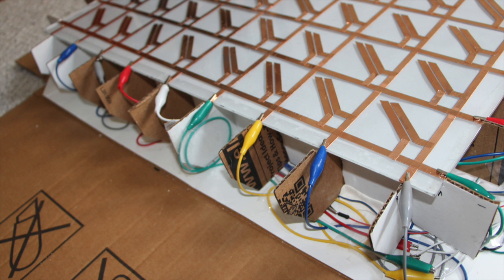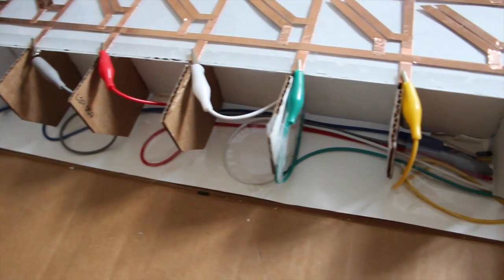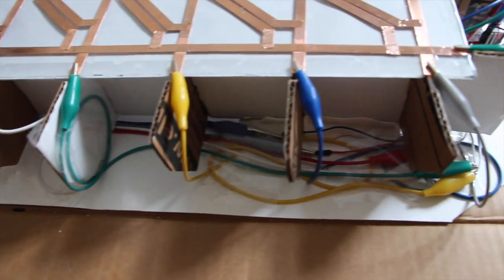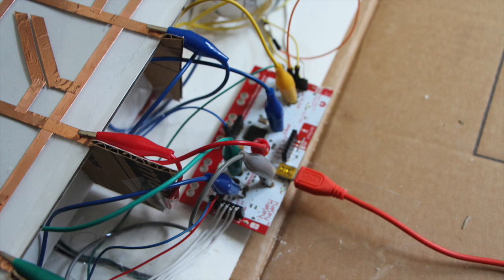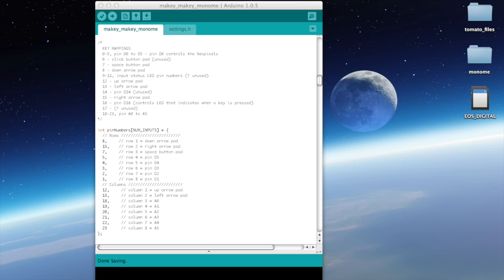Once we're done with the copper tape, it's time to attach the alligator clips. Each column and each row is attached to the Makey Makey through an alligator clip. It doesn't matter which alligator clip is attached to which Makey Makey pin so long as the Arduino code is updated and accurately maps the rows and columns to the appropriate pin.